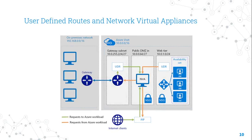User-Defined Route and Network Virtual Appliance (NVA): In this architecture, the NVA provides a secure network boundary by checking all inbound and outbound network traffic and passing only traffic that meets network security rules. However, the fact that all network traffic must pass through the NVA means the NVA is a single point of failure in the network. If the NVA fails, there is no other path for network traffic and all backend subnets become unavailable.